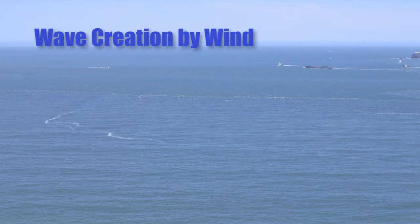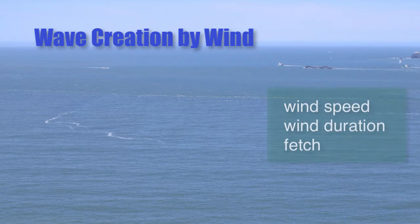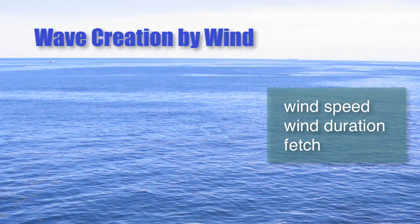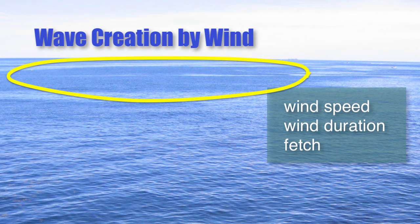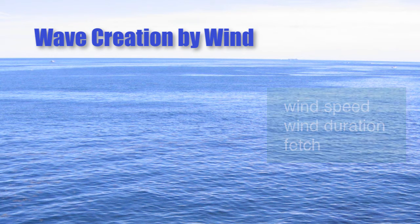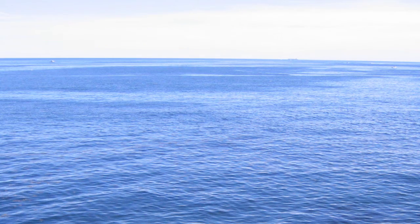We need a few things to get waves going, and that includes wind speed, wind duration, and fetch. The fetch is just the area over which the wind is blowing in the same direction without a significant change in speed. If we get these three ingredients with sufficient strength, duration, and area, then we can get wind that develops into a swell and can travel across the entire ocean on its own.